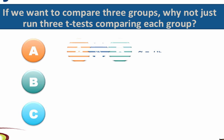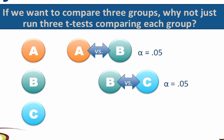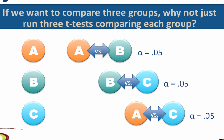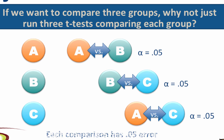We could run one t-test comparing group A and B, then a second t-test comparing groups B and C, and then a third t-test comparing groups A and C. But with our alpha level set at 0.05, that means that each comparison has a 5% error rate.